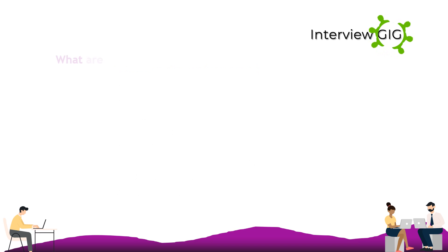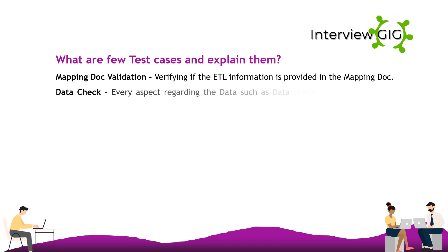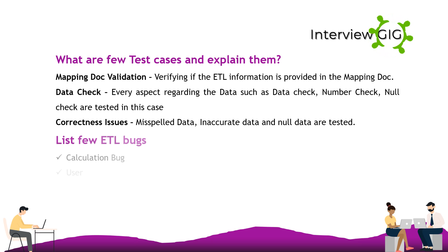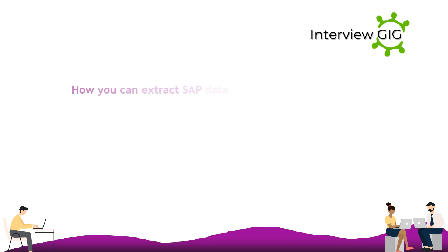ETL test cases include: mapping document validation — verifying if the ETL information is provided in the mapping doc; data check — every aspect of data such as data check, number check, and null check are tested; and correctness issues — misspelled data, inaccurate data, and null data are tested. ETL bugs include calculation bugs, user interface bugs, source bugs, load condition bugs, and ECP-related bugs.